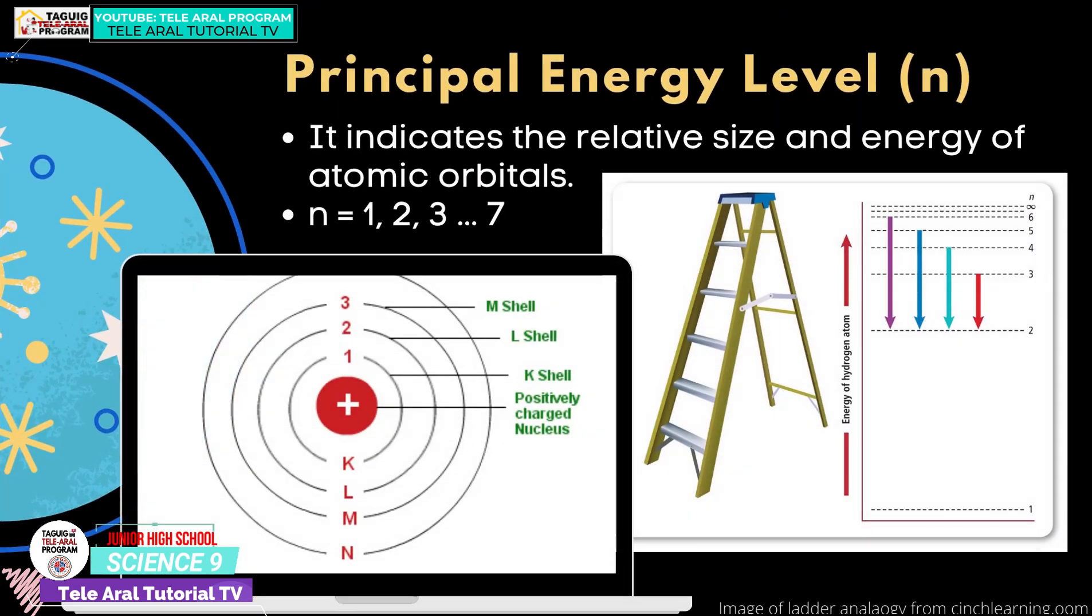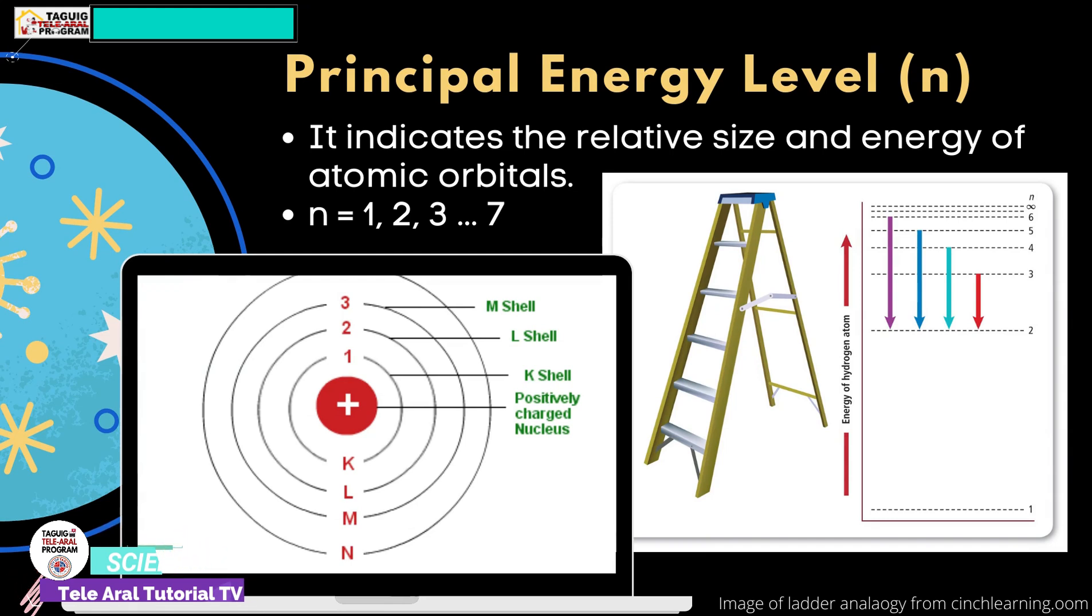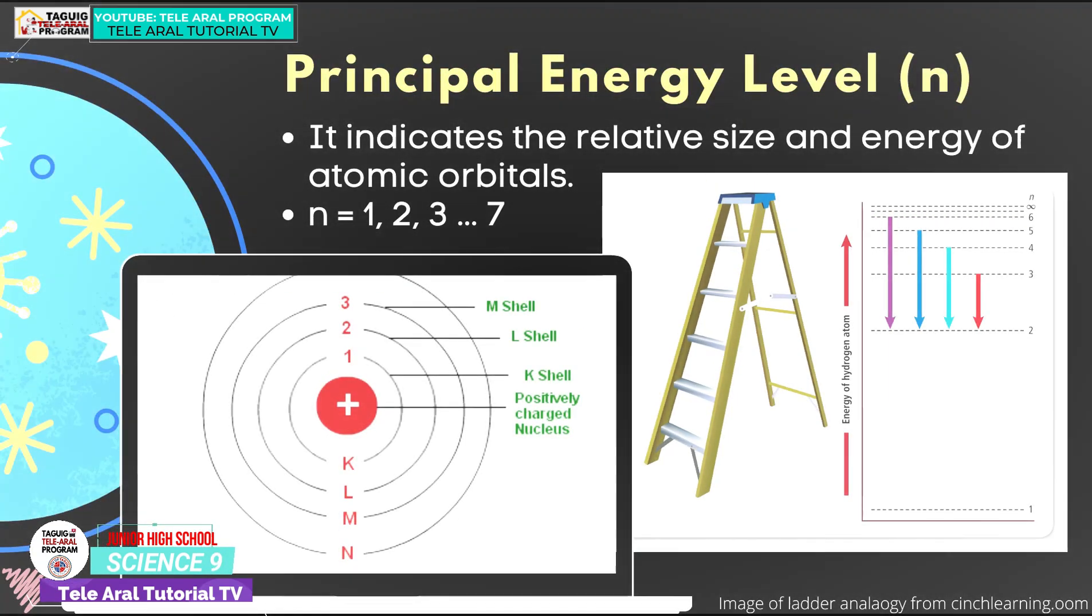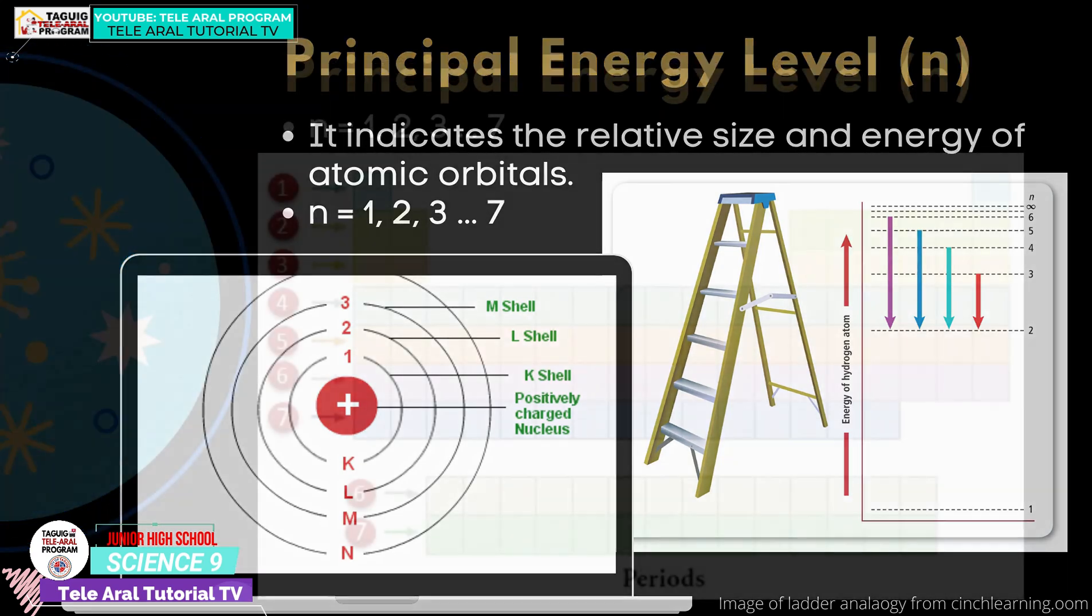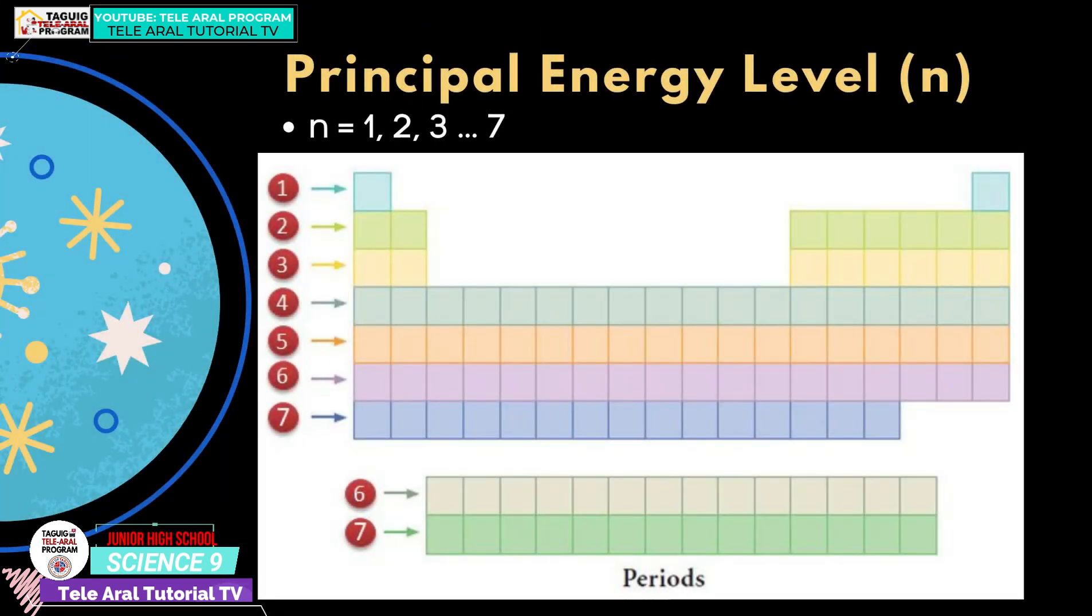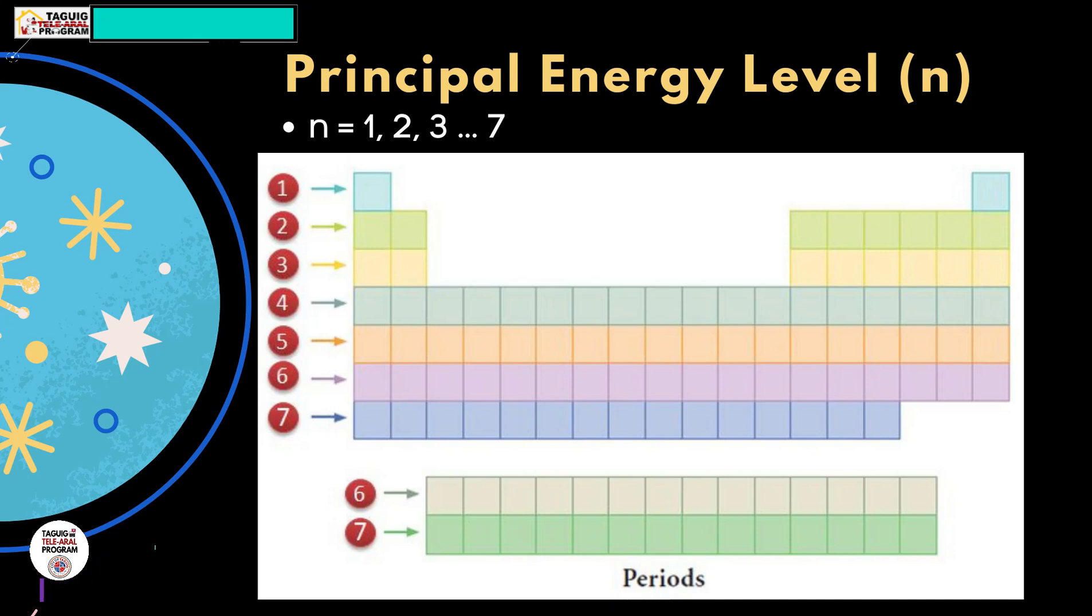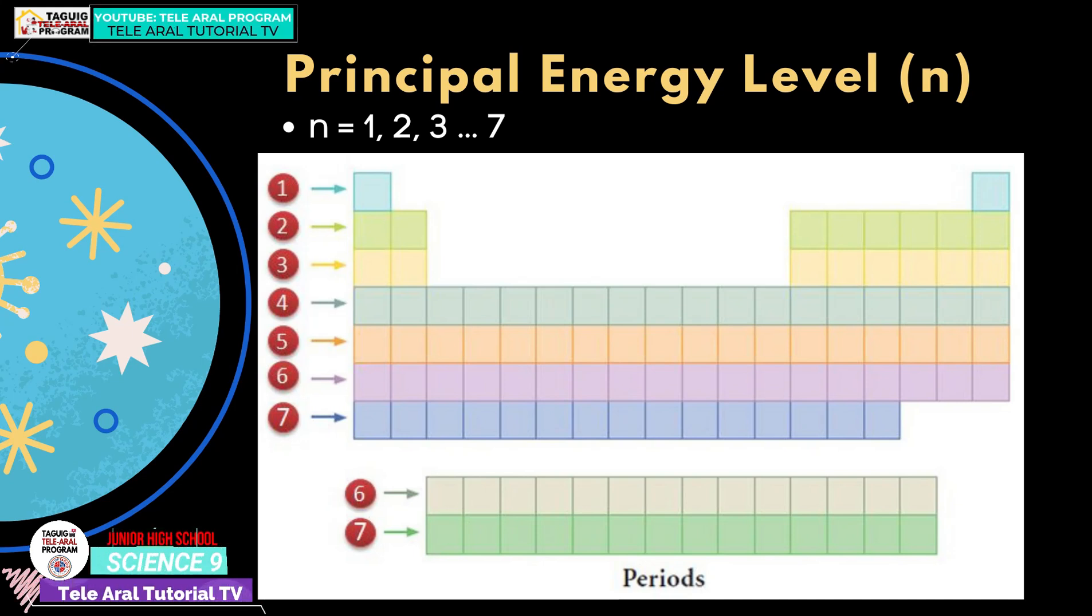The principal energy level indicates the relative size and energy of atomic orbitals. The smaller the electron's orbit, the lower the atom's energy state or energy level. Conversely, the larger the electron's orbit, the higher the atom's energy state or energy level. Let's take a look at the periodic table. How many periods do you see? We assign numbers 1 to 7 to the energy level of the element, which is also evident to the period of the element to where it is located.